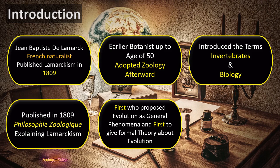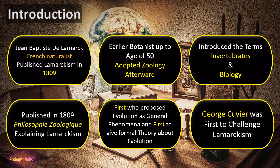He was the first person who proposed evolution as a general phenomenon, not limited to single or specific organisms, and he was also the first to give a formal theory about evolution. George Cuvier was among the most aggressive critics of Lamarckism and was the first person to challenge it as soon as the book was published.